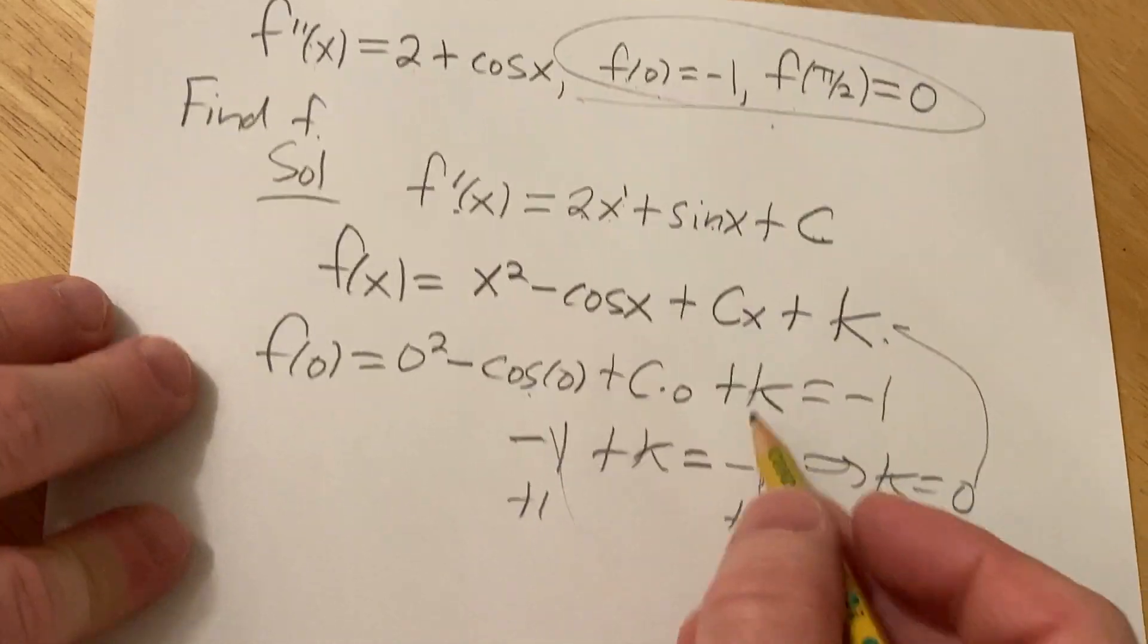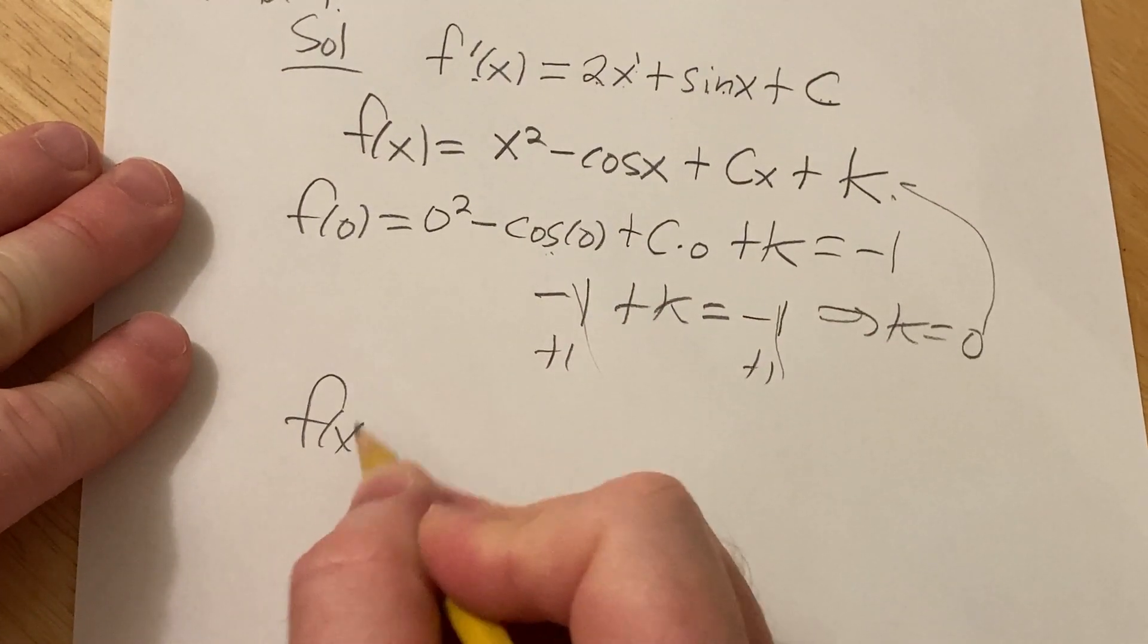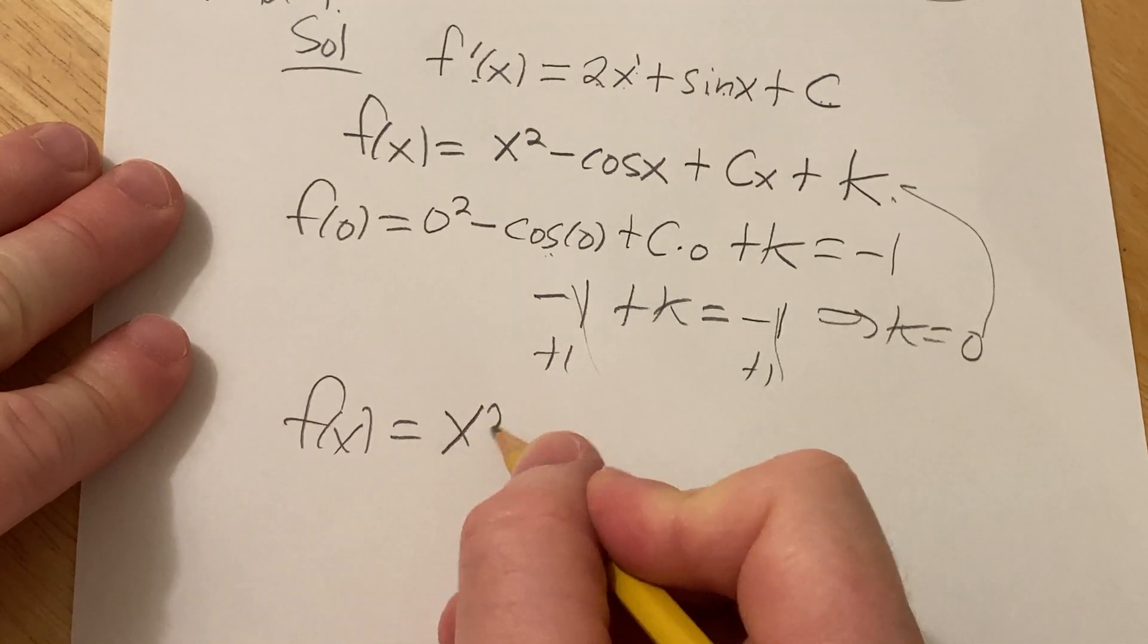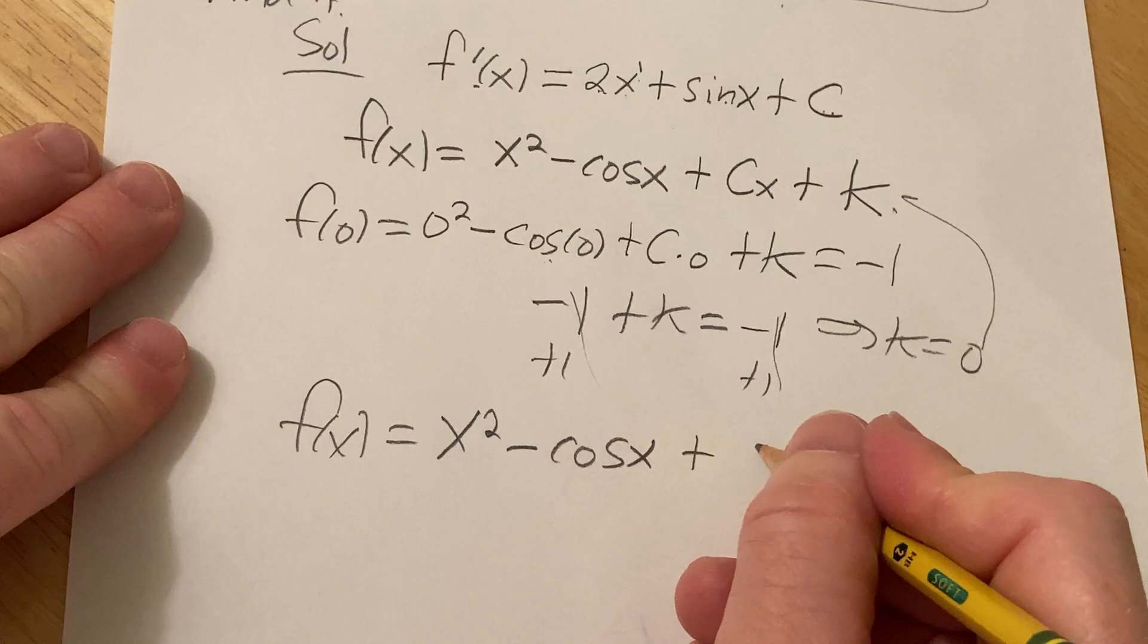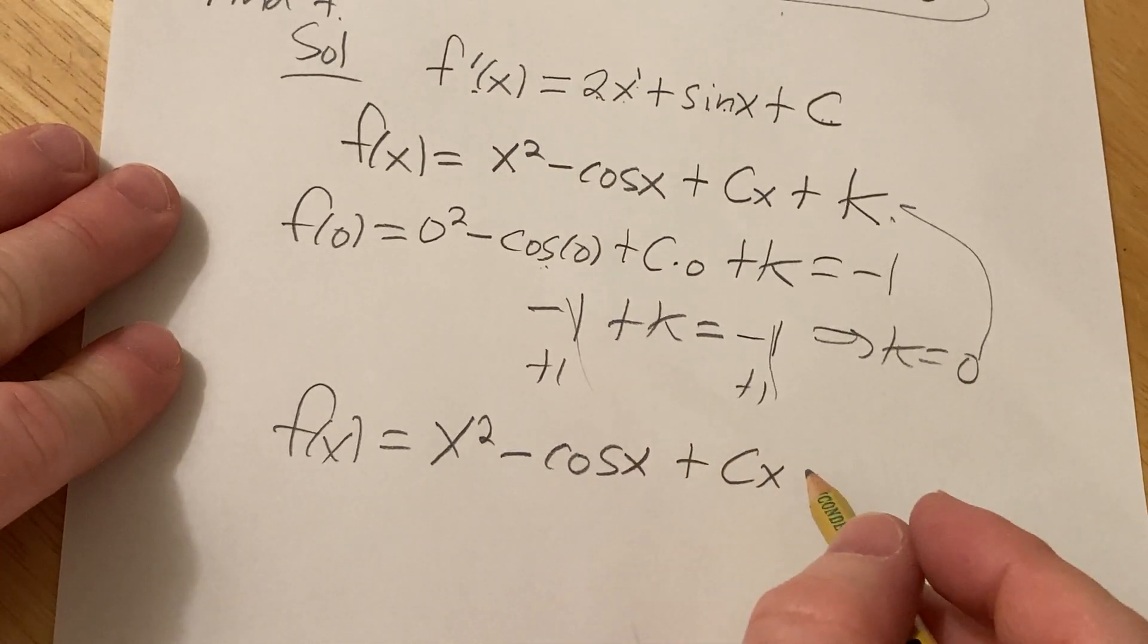So, I'm going to go ahead and plug that back in here to f. So, f of x is equal to x squared minus cosine x plus cx. So, now we have to find c.